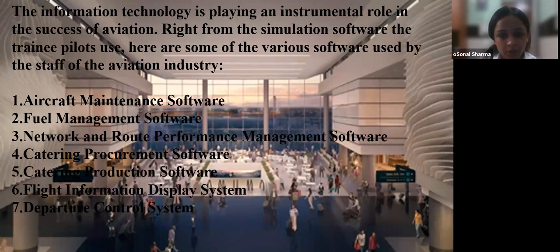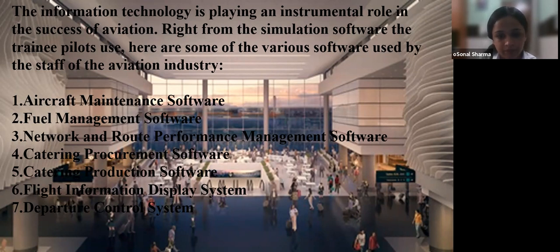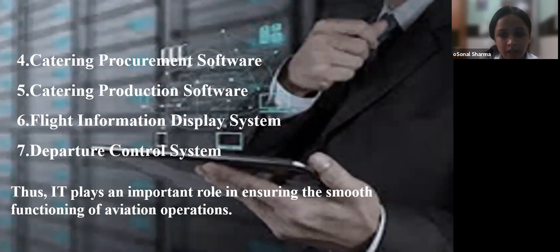The flight information display system allows travelers to get the latest information from any corner of the airport as well as on the internet. Departure control software works in conjunction with the reservation system to keep track of check-in travelers and issues boarding passes. There are numerous mobile apps customers use for checking flight times, booking flights, redeeming points, operations against fare, and mobile check-in, playing an important role in ensuring smooth functioning of aviation operations.